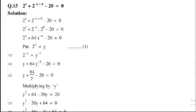2 power x plus 2 power minus x plus 6 minus 20 is equal to 0. So, 2 power x plus 2 power minus x plus 6 can also be written in the form of 2 power minus x dot 2 power 6 minus 20 is equal to 0. So, 2 power x plus 2 power 6 is equal to 64, 2 power minus x minus 20 is equal to 0.